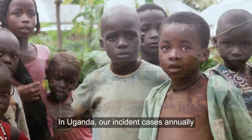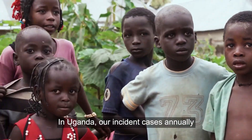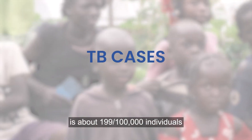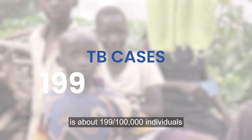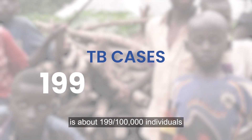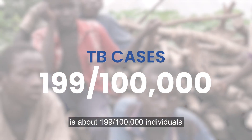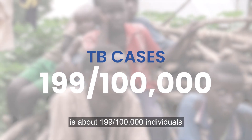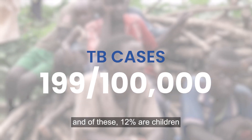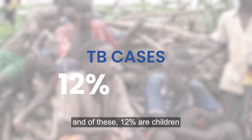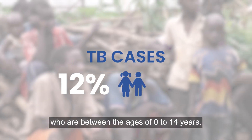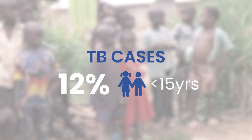In Uganda, our incident cases annually is about 199 out of 100,000 individuals, and of these, 12% are children who are between the ages of 0 to 14 years.